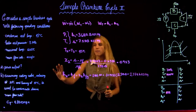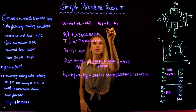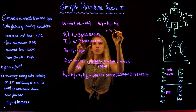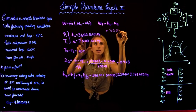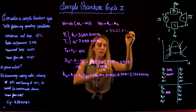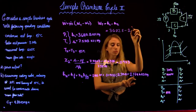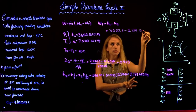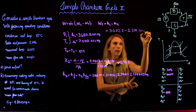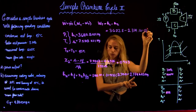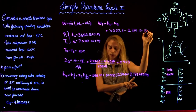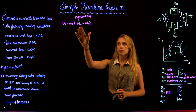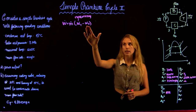Now that we have H1 and H2, we can calculate the work of the turbine: 3682.8 minus 2374.16, which equals 1308.64 kJ/kg. Now that we have the work of the turbine, we are going to calculate the work of the pump.